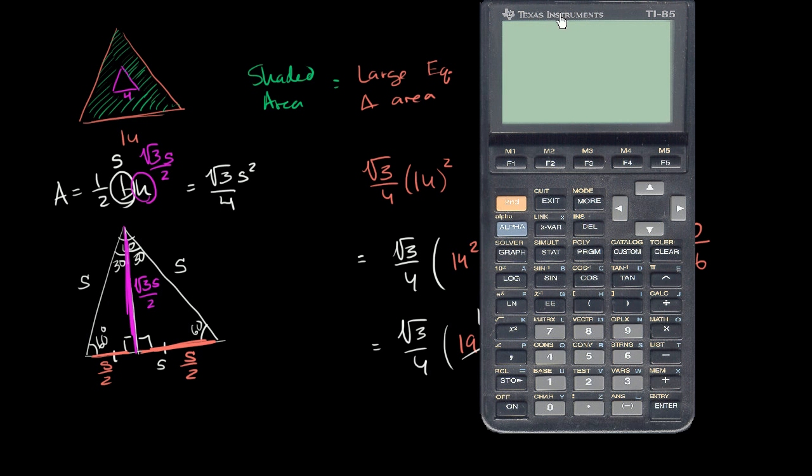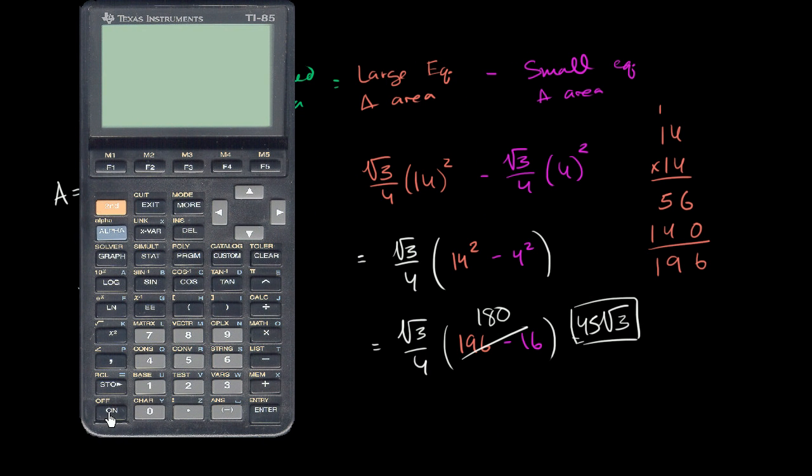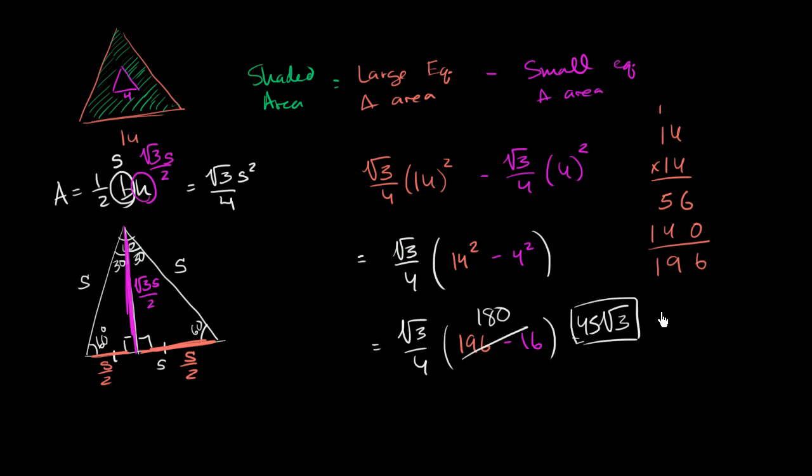So let me get my calculator out. So let's go 45 times the square root of 3 would get us to 77. If I wanted to round to the nearest hundredth, that's 77.94. So this is approximately equal to 77.94 square units, the area of the shaded region.